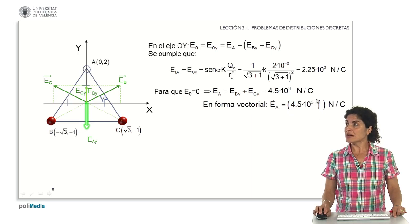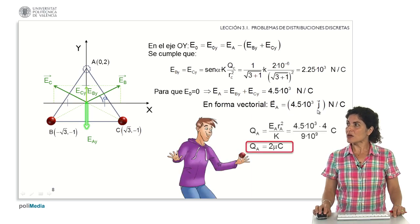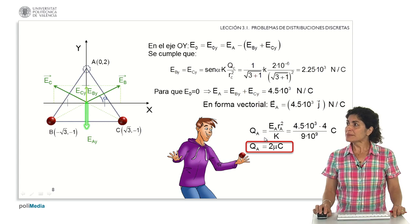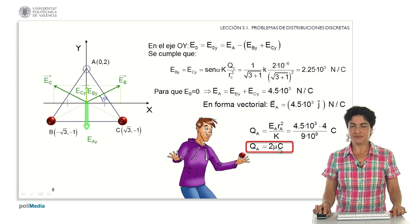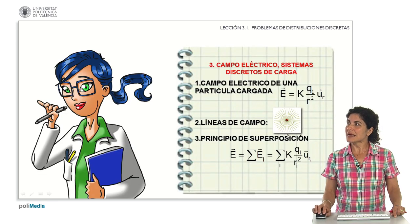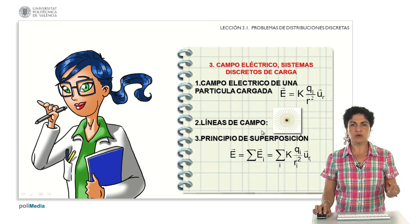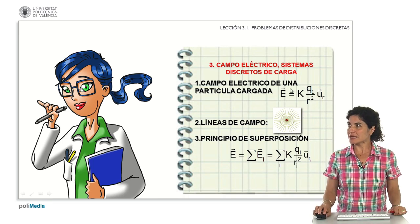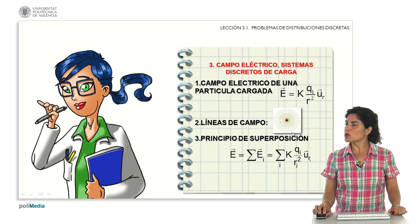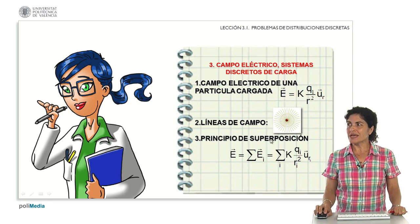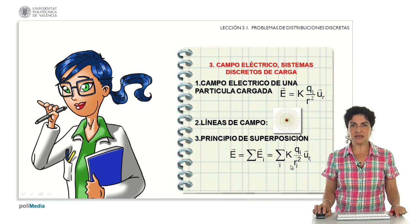In vector form, it will be directed according to the vertical component of the OY axis, and therefore the charge that I must place at A will have a value — cleared from the equation of the field it generates — of 2 microcoulombs. Therefore, we have seen how to practice the different properties of the electric field, and we already know how to calculate specific values of charge or field generated by discrete charge distributions. I apply the general field definition, take into account the interactions from the field lines, and never forget to use the superposition principle to consider all the charges involved. We will continue with more studies in future presentations. Thank you very much.